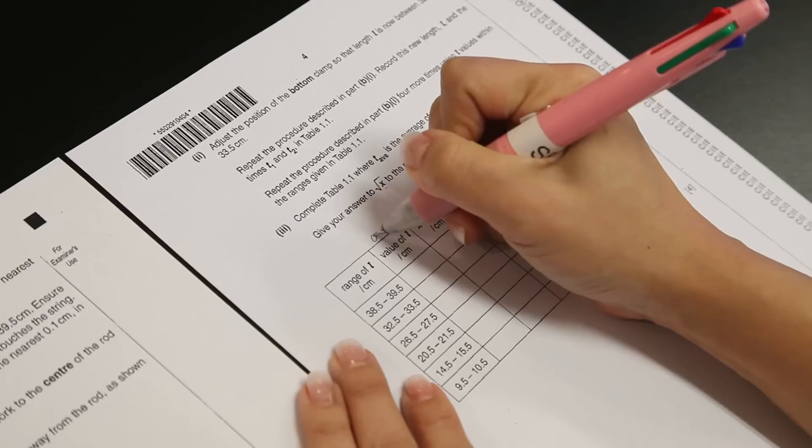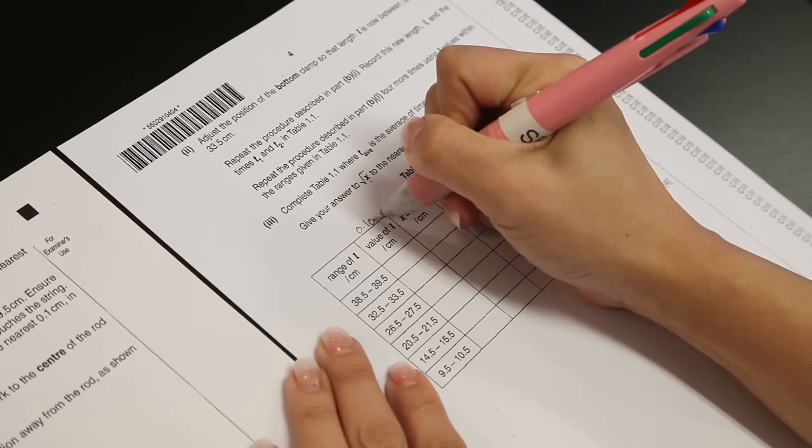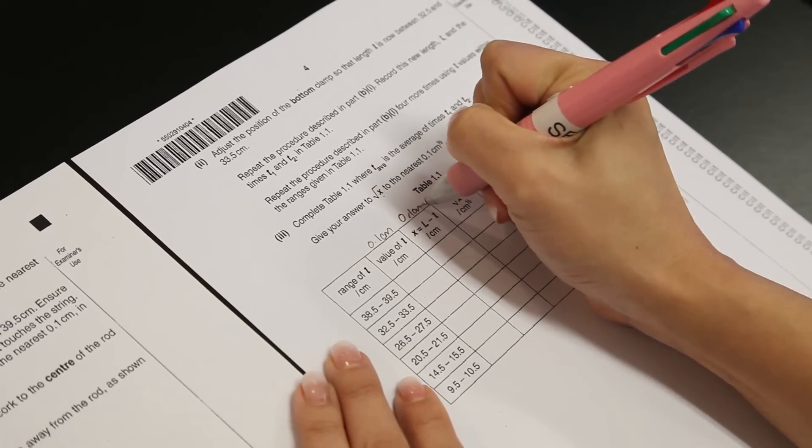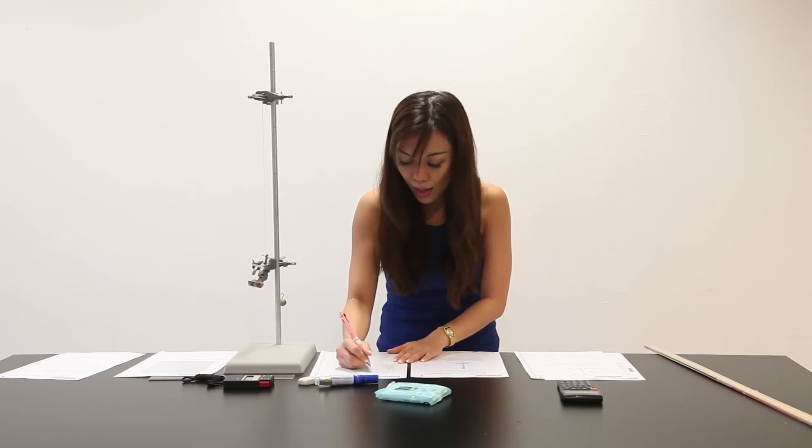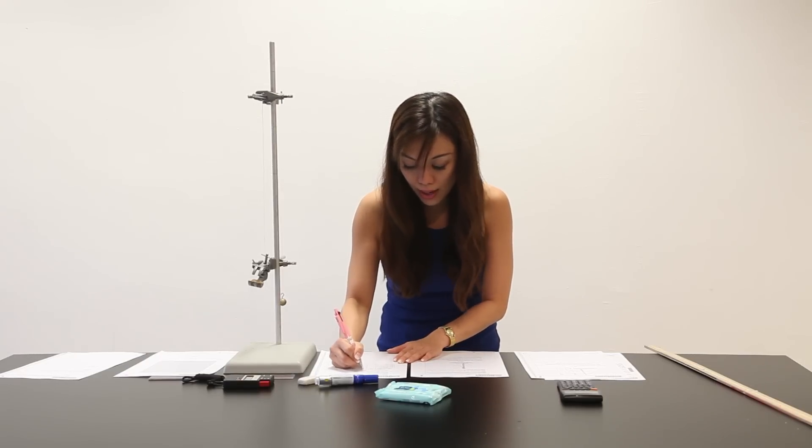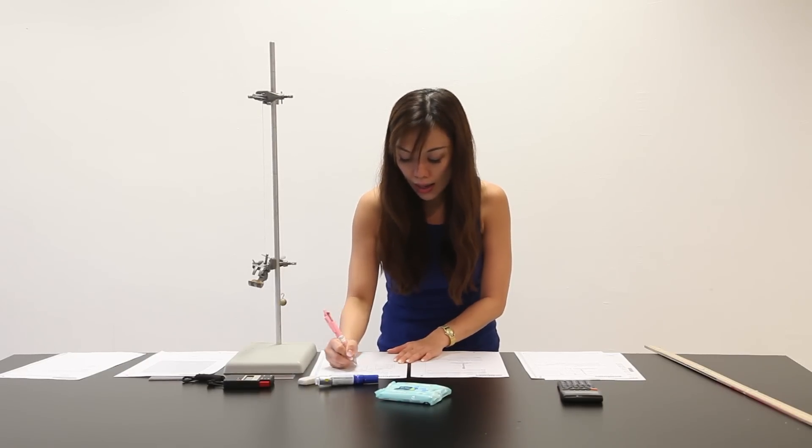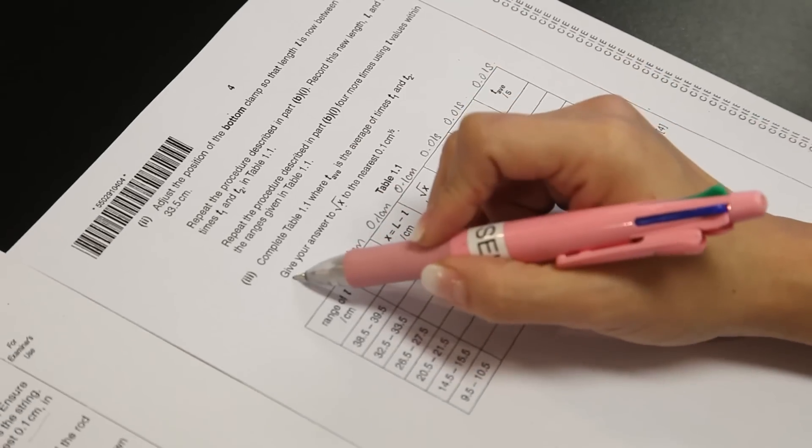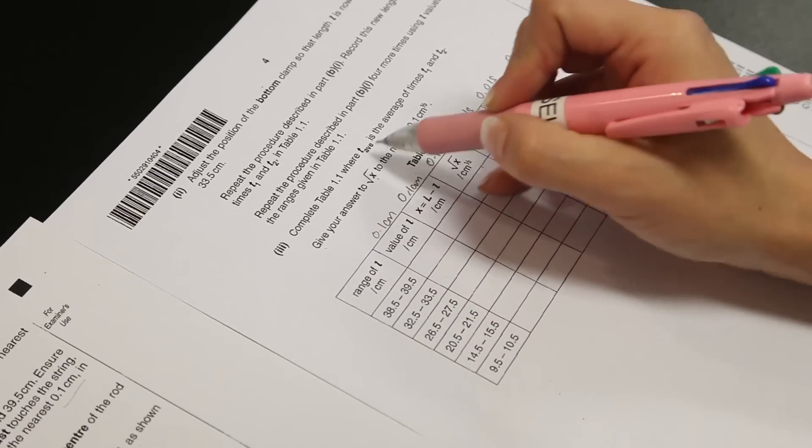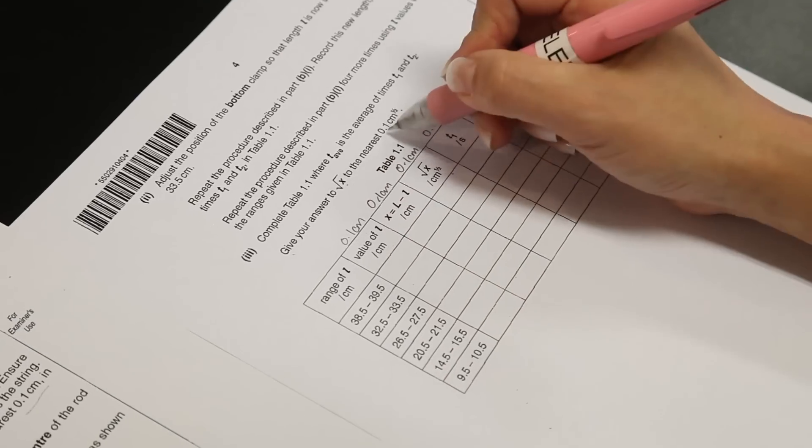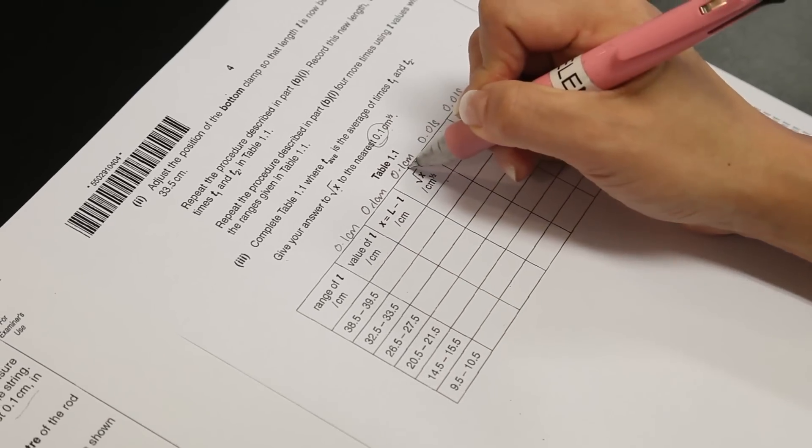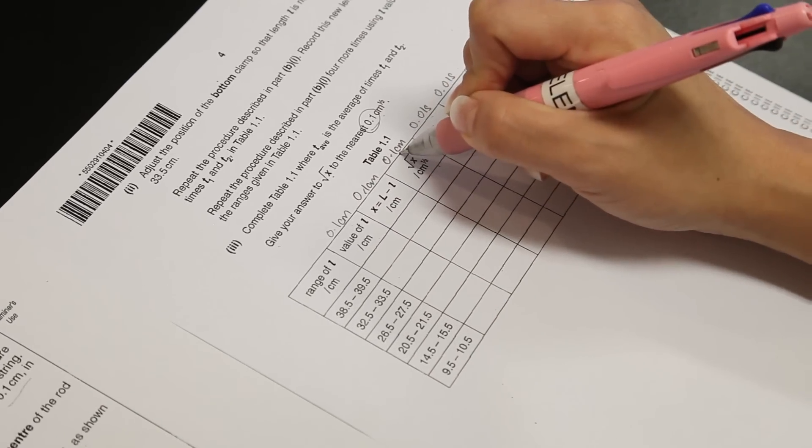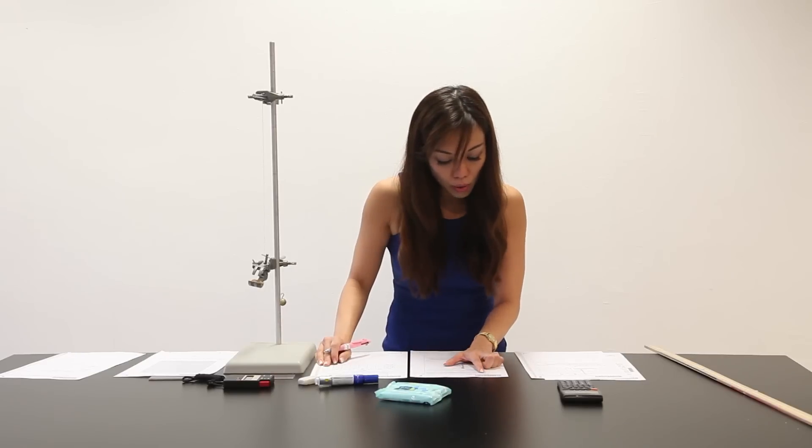So, on top of the table here, I will write down a note, 0.1 cm. So that I will remind myself that every single reading that I'm taking today, I need to bear in mind the 1 decimal place here. Over here, it says give your answer to square root of x to the nearest 0.1 cm. So, I have written down here as well, 0.1 cm.